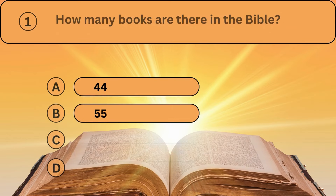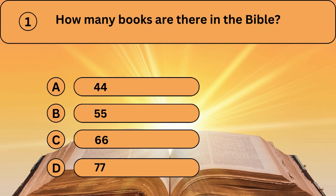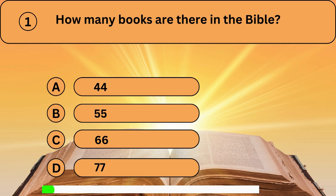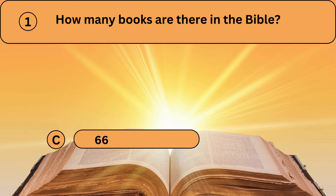Question one. How many books are there in the Bible? A. 44. B. 55. C. 66. D. 77. 66 is the correct answer.